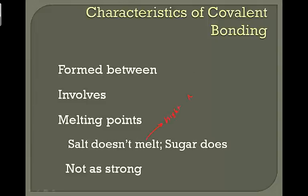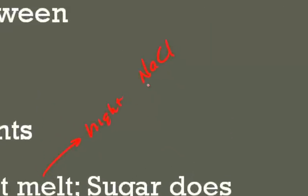If you remember, salt is NaCl: cation, anion, metal, nonmetal. Therefore this is an ionic compound. Ionic compounds have a high melting point.